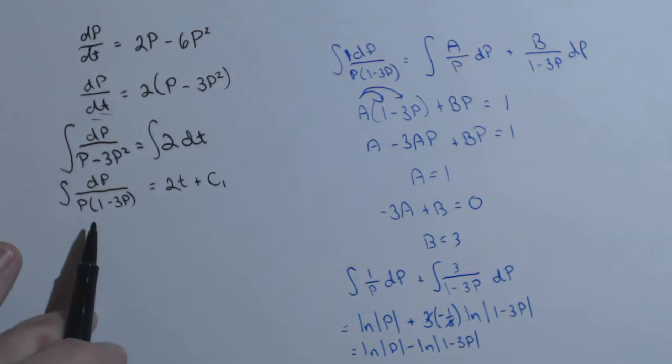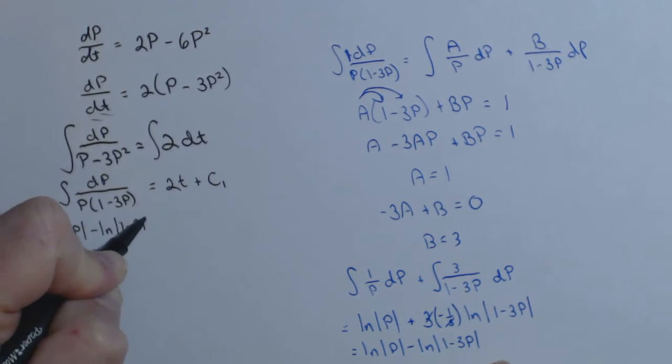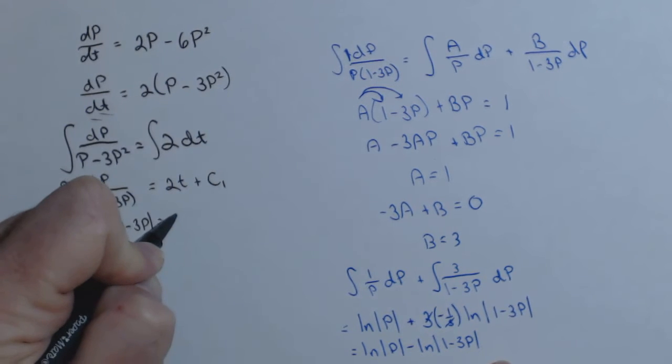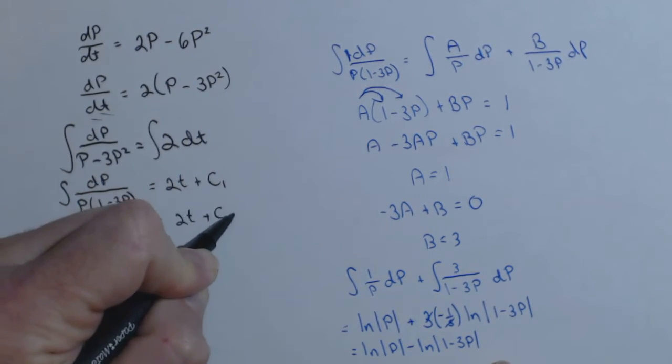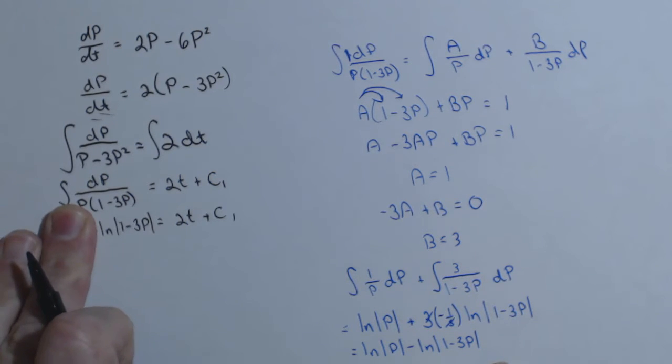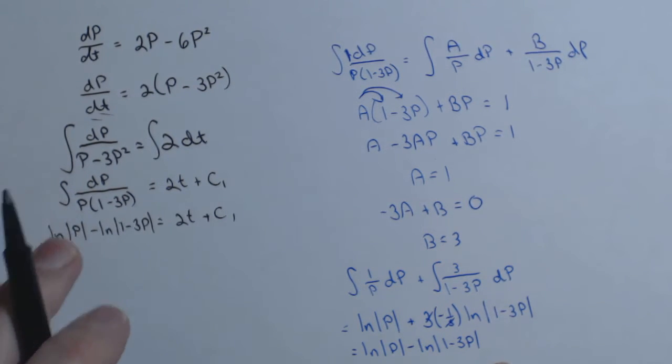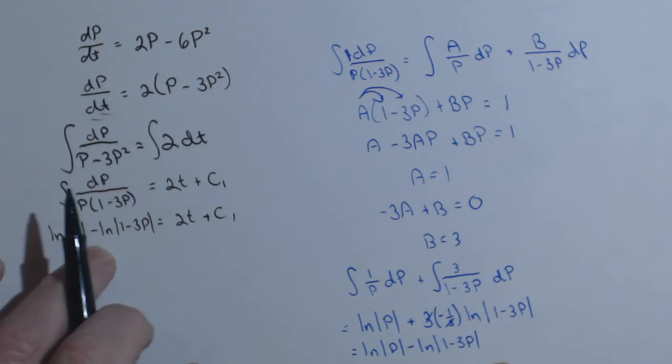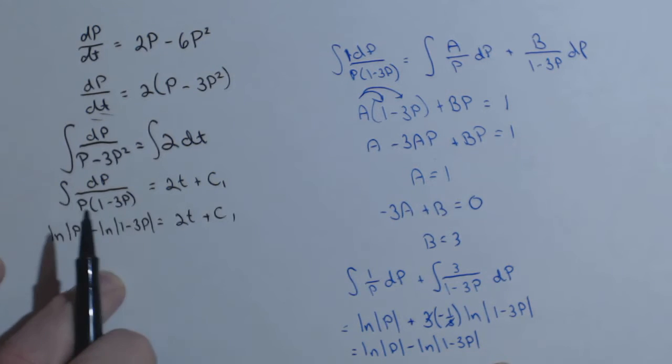Now let's come back over to here to what we're trying to solve. So putting this in here, we get ln of the absolute value of p minus ln of the absolute value of 1 minus 3p equals 2t plus c1. Now if we just had one of these, we'd make both sides exponents of e, and we'd go on our way. But it's those two logs in there that right now are causing an issue.